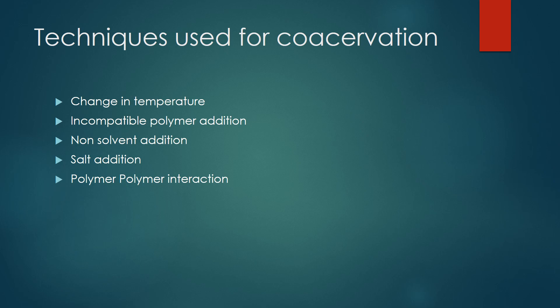The techniques which can be used for coacervation or phase separation — that is, formation of three immiscible chemical phases — include: first, a change in temperature; second, incompatible polymer addition, which changes the solubility of the coating polymer; third, non-solvent addition, which again changes polymer solubility; fourth, salt addition, which creates imbalances resulting in coalescence of the polymer; and fifth, complex coacervation via polymer-polymer interaction.